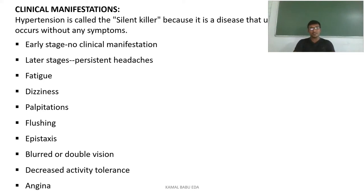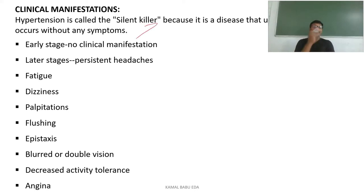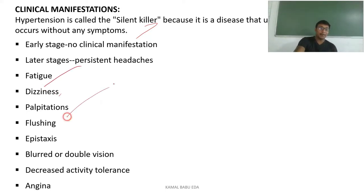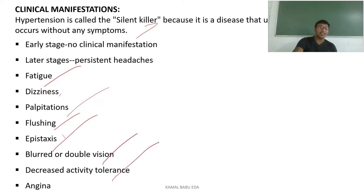Hypertension has become one of the major causes of death. It is also called the silent killer because it occurs without any signs and symptoms. At early stages there are no clinical manifestations. In later stages the person may have persistent headaches, fatigue, dizziness, palpitations, flushing, epistaxis (bleeding from the nose), blurred vision, decreased activity intolerance, and angina.